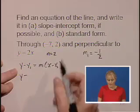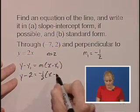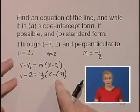So we'll have y - y₁ is 2, equals -1/2 times x - x₁, which is -7. Watch your negative signs.